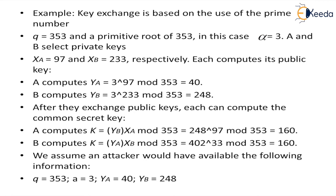For example, suppose q = 353 and the primitive root of 353 is alpha = 3. A and B select private keys x_A = 95 and x_B = 233 respectively. Each computes their public key: A computes y_A = 3 raised to 95 mod 353, which gives 40. B computes y_B = 3 raised to 233 mod 353, which gives 248.